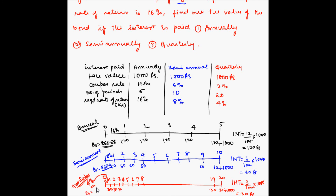So in the case of quarterly interest payments, B0 is equal to 863.7 rupees. To summarize: in the case of annual payments the value of the bond came out to 868.88; semi-annual payments gave 865.6; and quarterly payments gave 863.7 rupees. As you can note, the value is decreasing when you move from annual to semi-annual to quarterly.